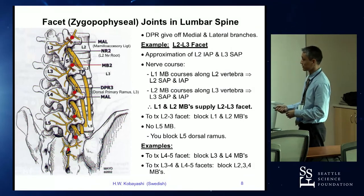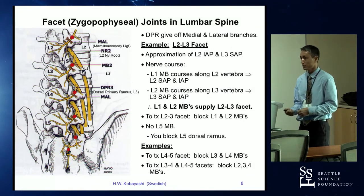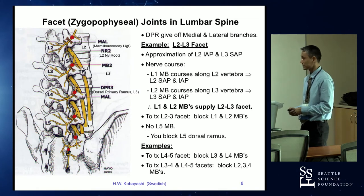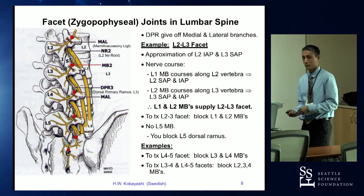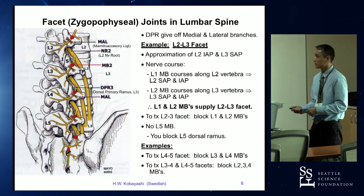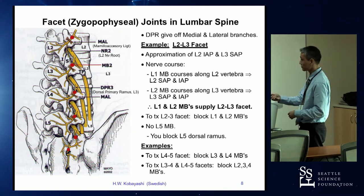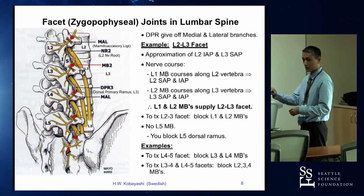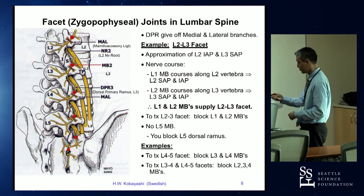If you wanted to block the L2-3 facet joint, you are actually blocking the L1 and L2 medial branches. Likewise, if you wanted to block L3-4 and L4-5 facets, you're actually blocking L2, L3, L4 — not L3, L4, L5. So it's a little confusing, but you're just offsetting the level number by one.